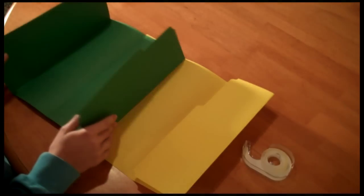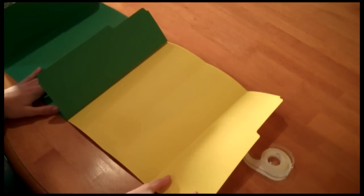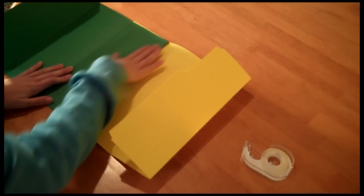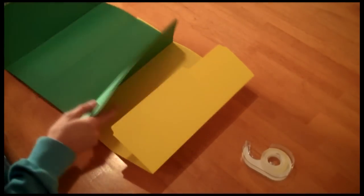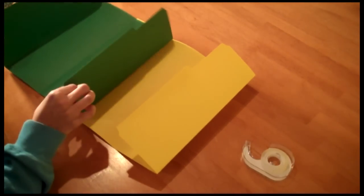When you're done, your folder book should look something like this. Just a note, remember that the green folder is attached to the yellow folder with the back and not by the sides.